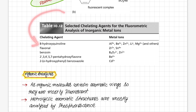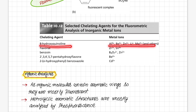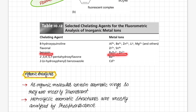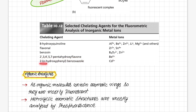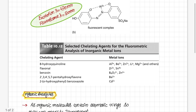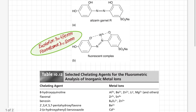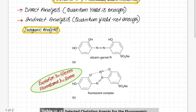Looking at this table, 8-hydroxyquinoline is a chelating agent that forms complexes with aluminum, beryllium, zinc, lithium, magnesium and others — all used in fluorescence analysis. Similarly, flavonol forms complexes with zirconium and tin. Benzoin is used for borate and zinc. 2,3,4,5,7-pentahydroxyflavone forms a beryllium fluorescent complex. Also listed is 2-hydroxyphenyl benzoxazole. In this way, we use the indirect method of analysis for inorganic species.